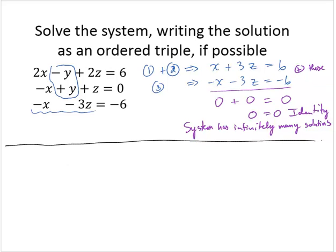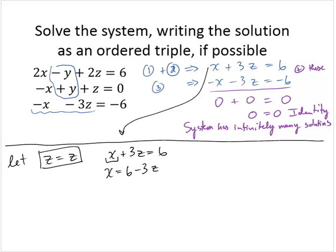Here's what we generally do: we let z equal itself, just some number. I know that from the previous step, x plus 3z equals 6. So then I can solve this equation for x and get it in terms of z. So then x would equal 6 minus 3z. Now I have a value for z. If z is some number, then x is 6 minus 3 times that number. And now I just need to find a value for y.